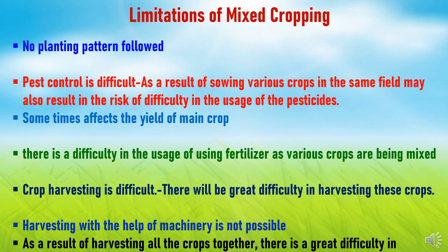There is also difficulty in crop harvesting because crops are mixed and sown randomly, requiring a lot of time and labor. Machinery cannot be used, so the only alternative is manual harvesting. As a result of harvesting all crops together, there is also difficulty in threshing operations — after harvesting, the crops must be sorted and separated before threshing, and there are chances of different crop seeds mixing with each other.